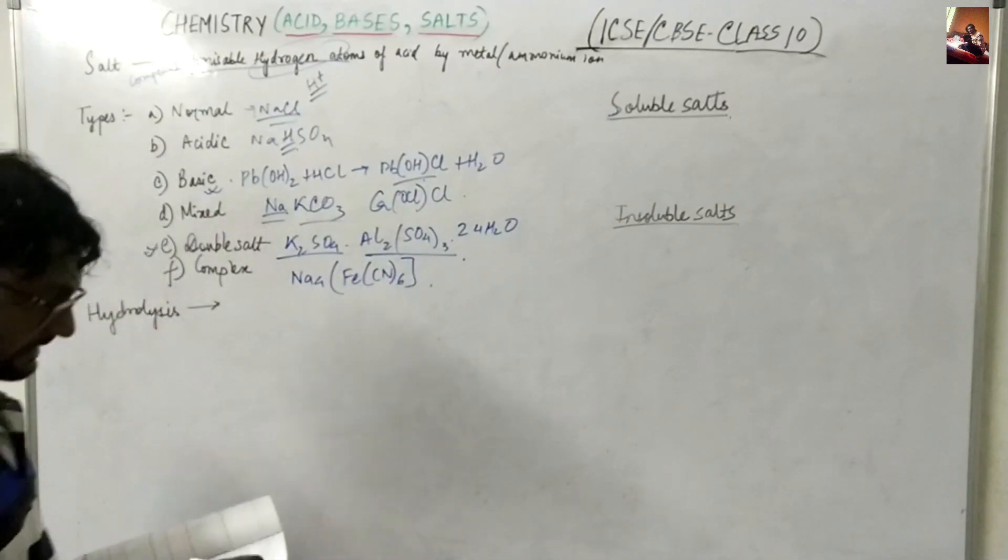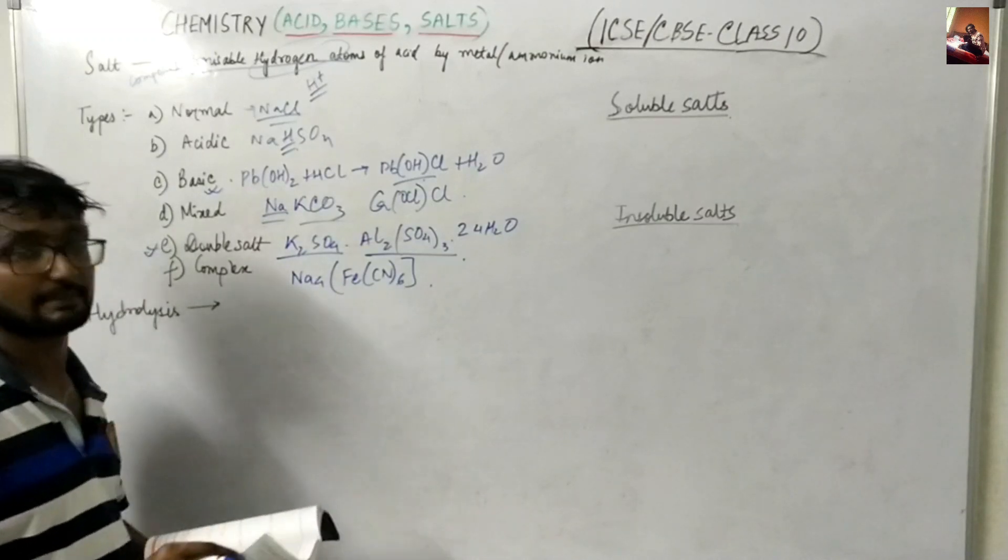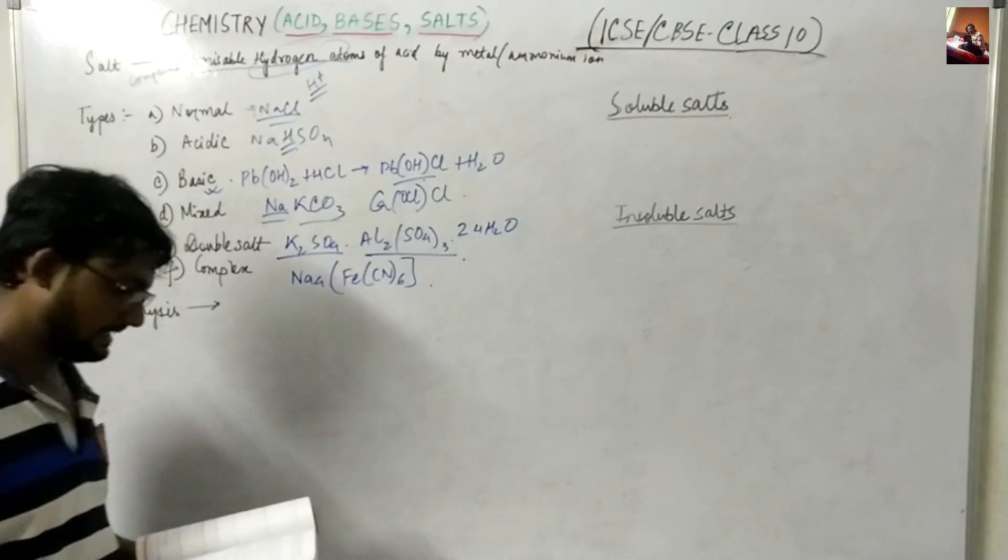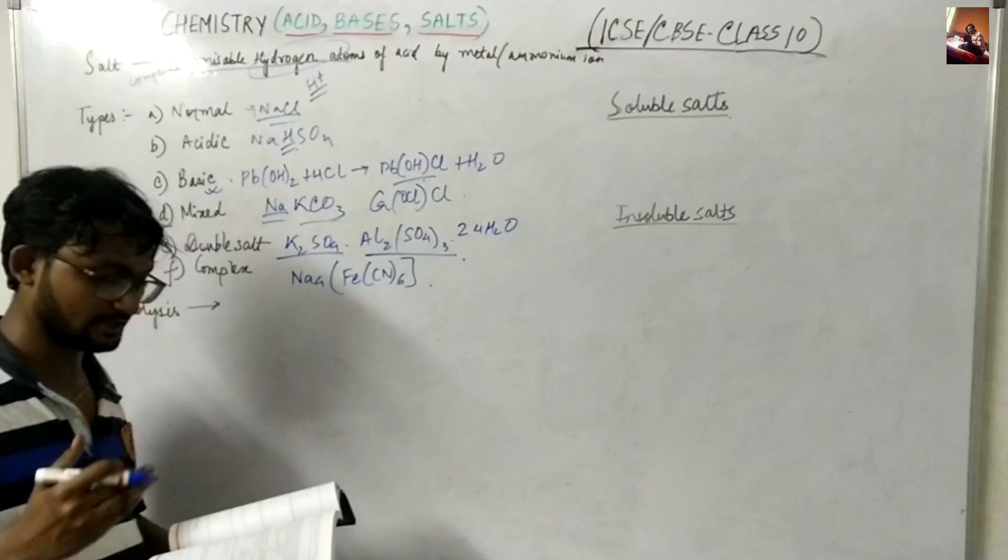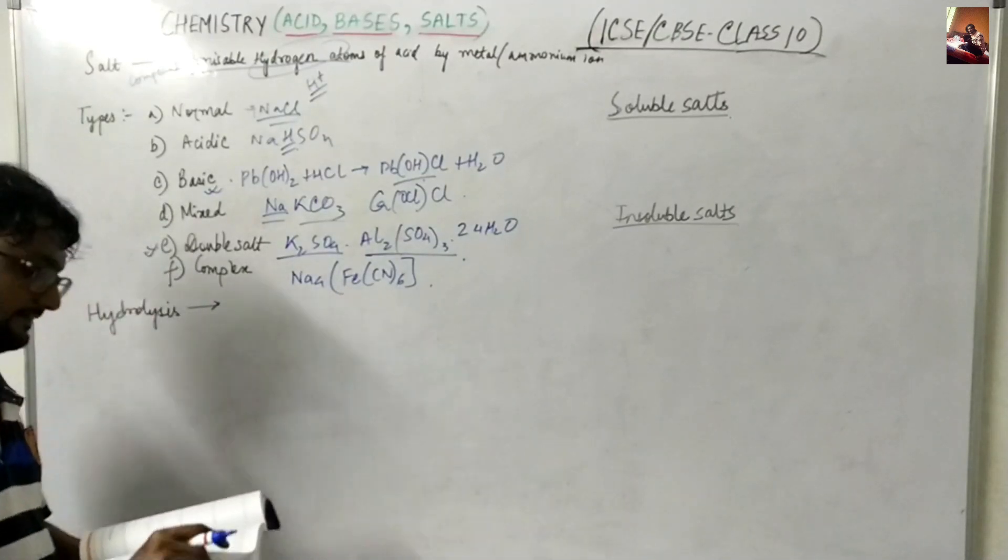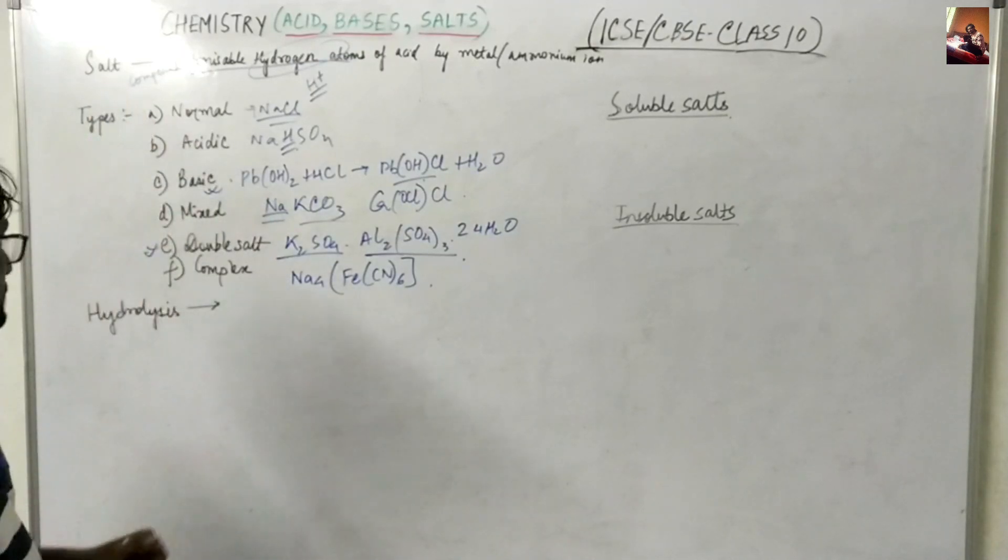So naming of salt like the first part comes from the metal of the base that is being used, like sodium hydroxide gives sodium chloride, so sodium. And like the last part comes from the anion of the acid. So combination of cation from a base, cation means a positive ion, and anion from an acid that is a negative part. So this is mainly the different types of salt.